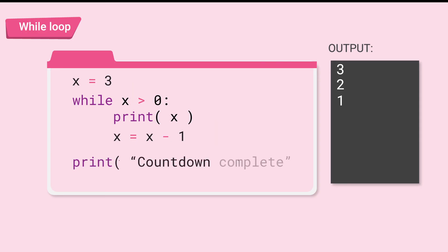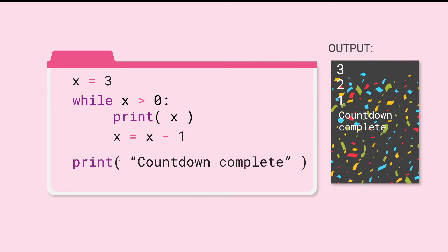Insert one more line to indicate that the loop is done. Print countdown complete. Notice that the last print statement is not indented, because it's not part of the while block. After the while loop is done, the next line will execute printing countdown complete.